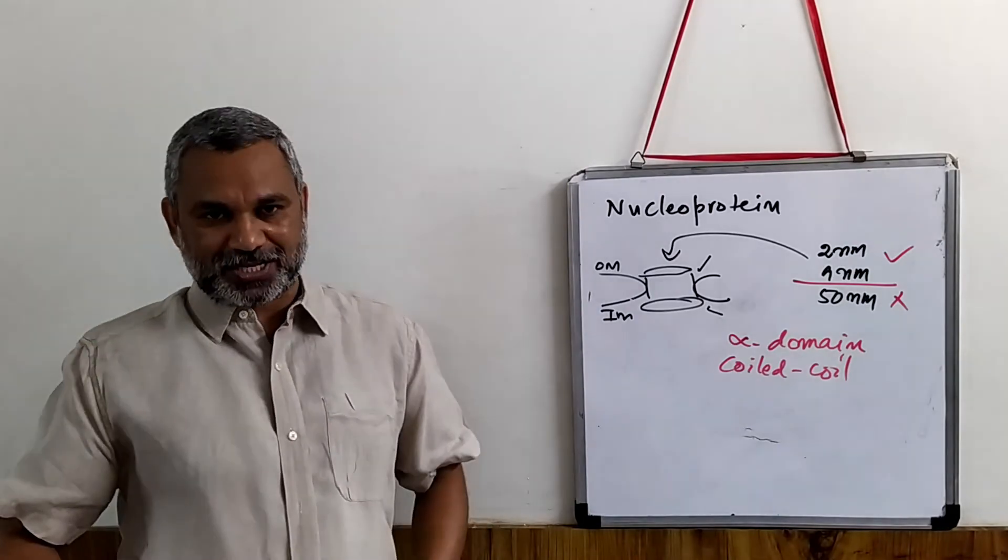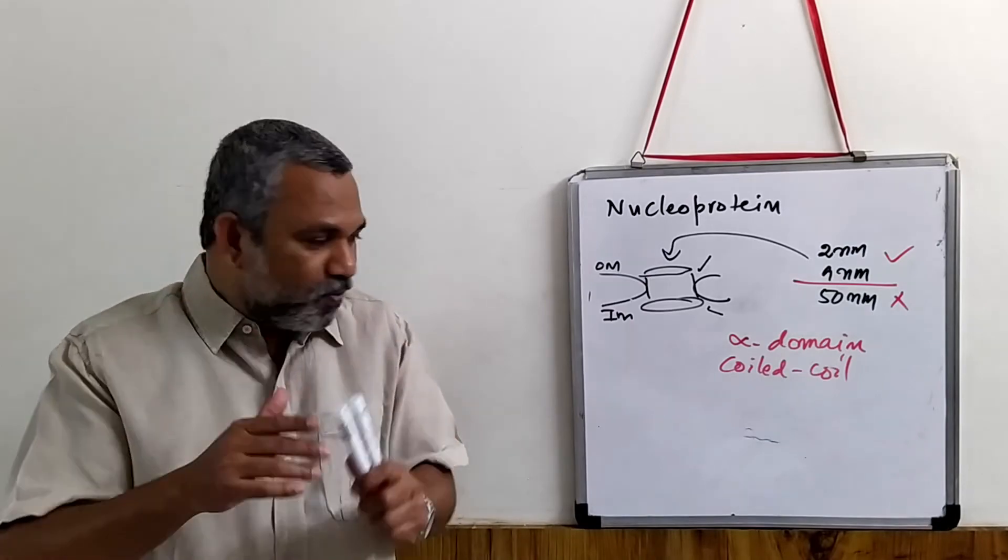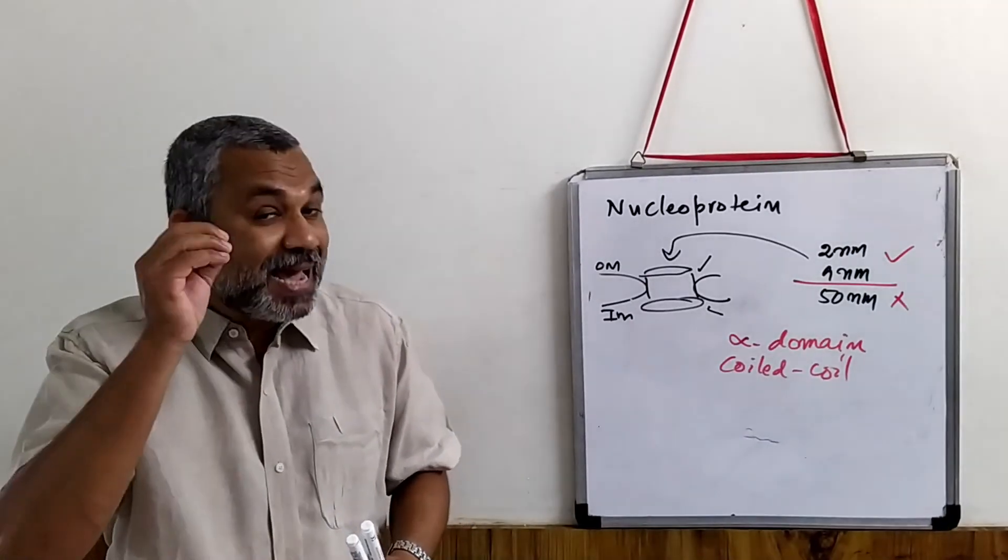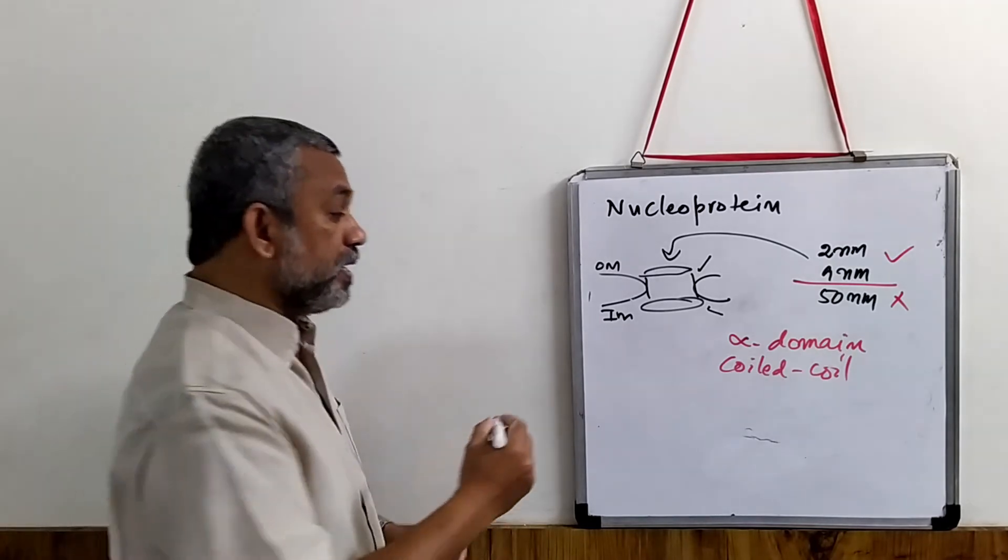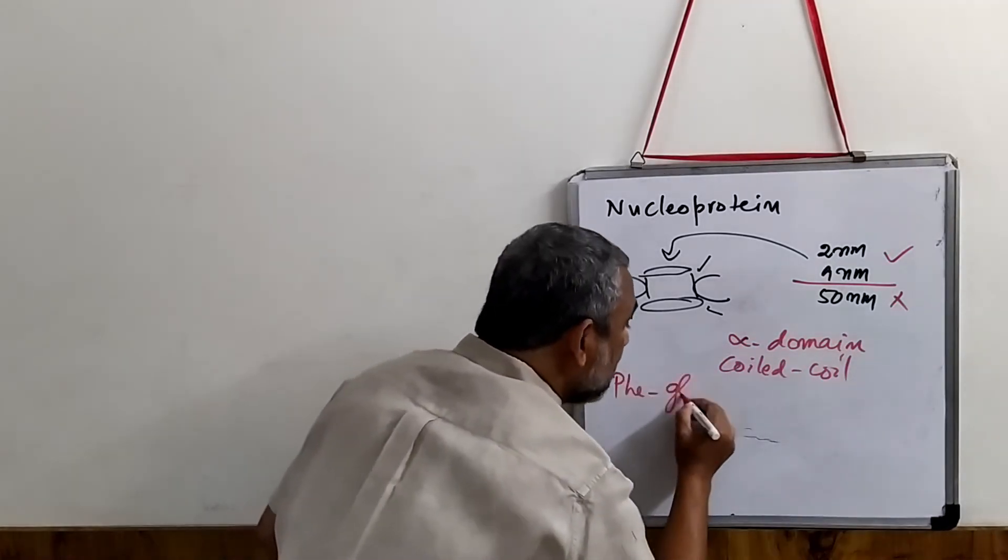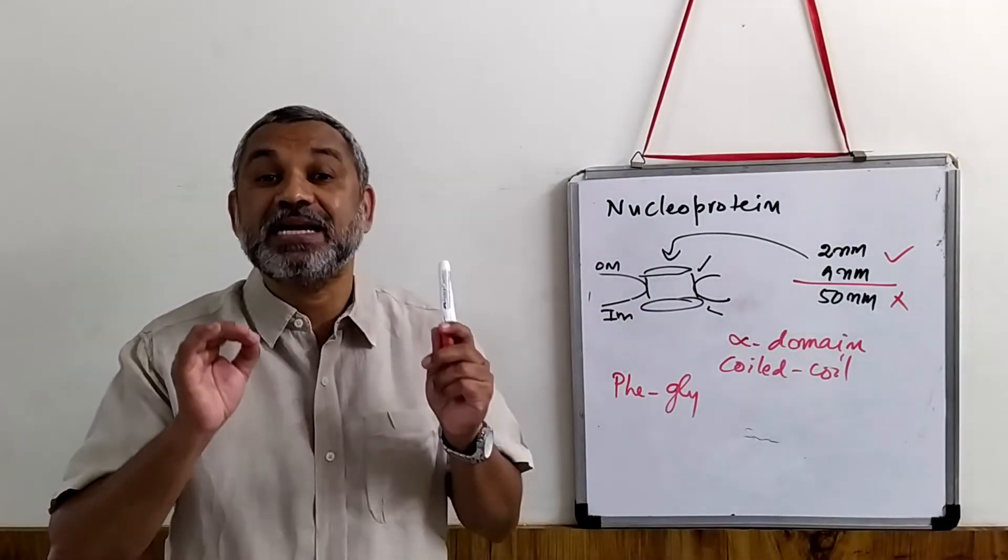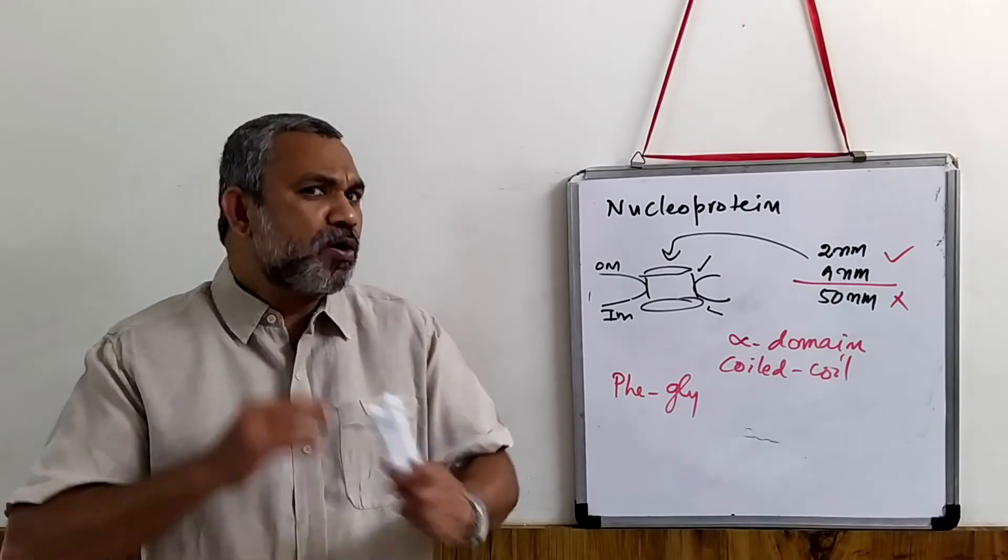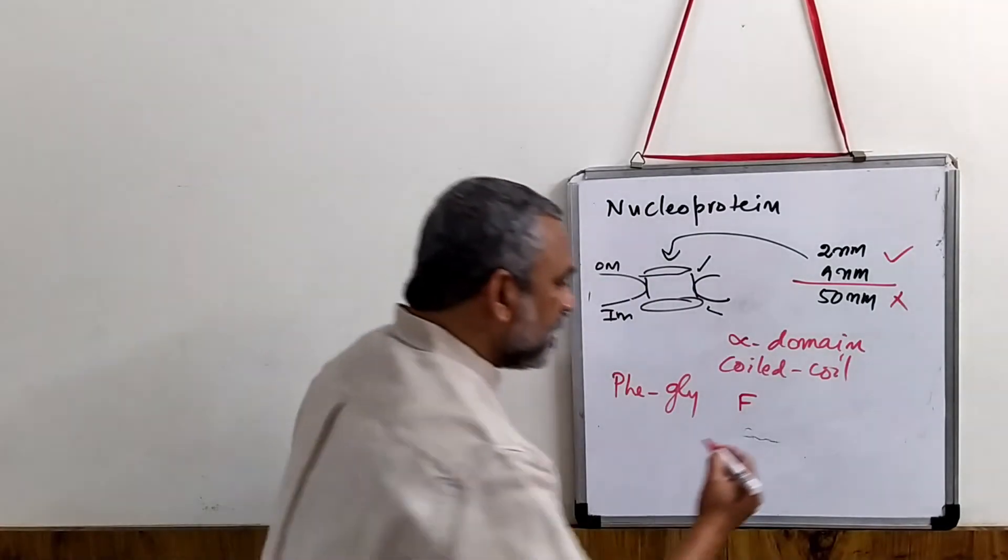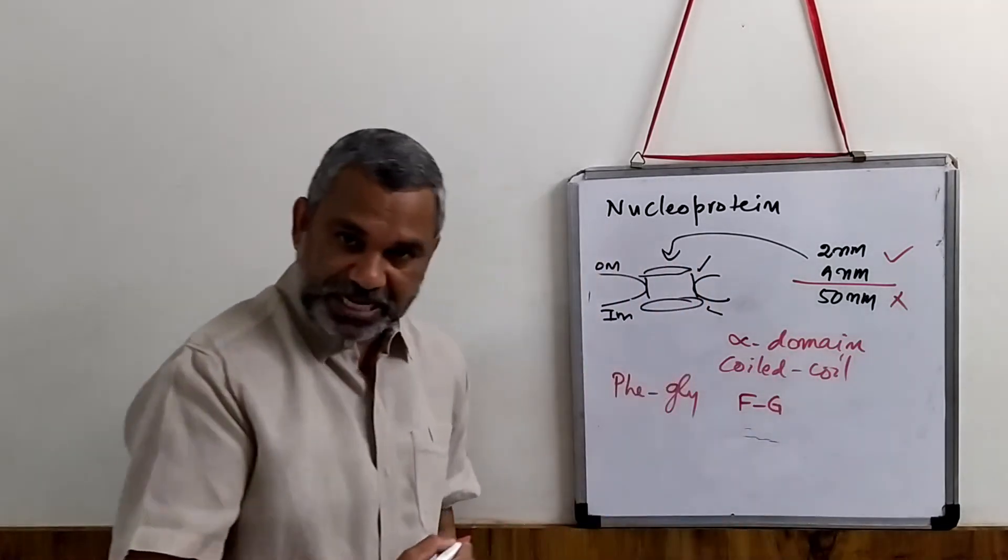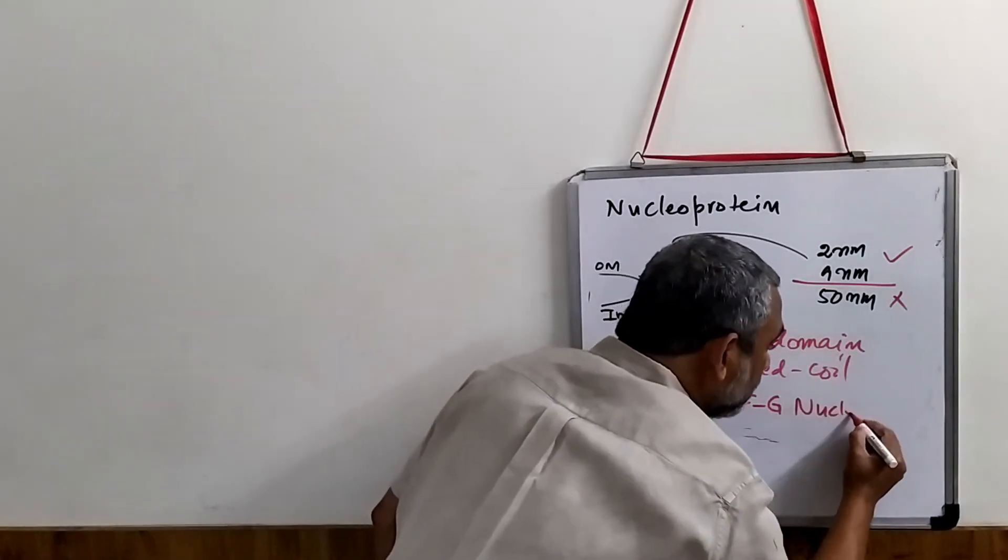We have elaborately looked at the coiled-coiled structure in one of the videos. So it forms a kind of coiled-coiled structure, and that is in the nucleopore. And in the nucleopore, these proteins have a lot of phenylalanine and glycine that is repeated number of times. Phenylalanine and glycine are repeated, and these are called nucleoporins.